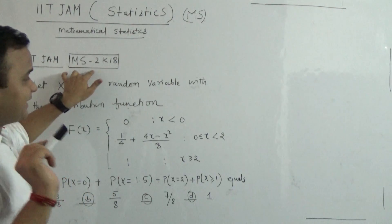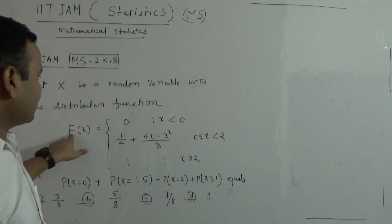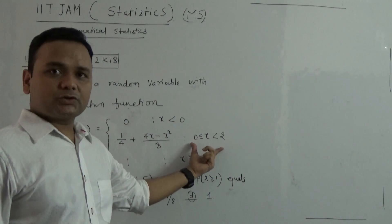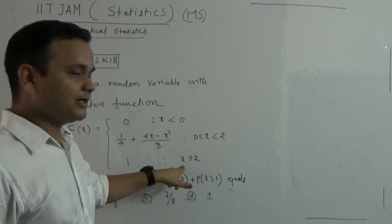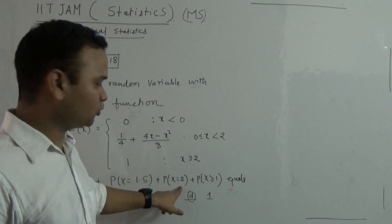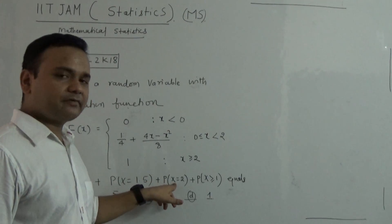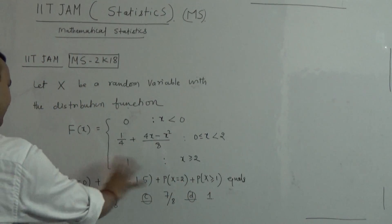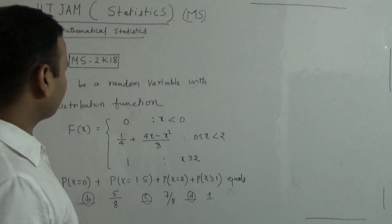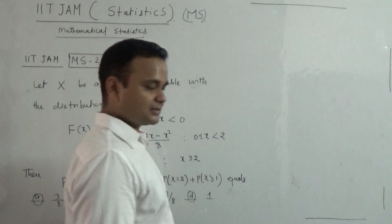So this IIT JAM MS 2018, what is the problem? The problem is very simple. Let X be a random variable with the distribution function defined as follows: when X is less than 0, the value is 0; when X is between 0 and 2, the distribution function is a continuous function; and when X is greater than or equal to 2, the distribution function is constant 1. Then you are asked to find the probabilities at X equal to 0, 1.5, 2, and greater than or equal to 1, and find their sum.